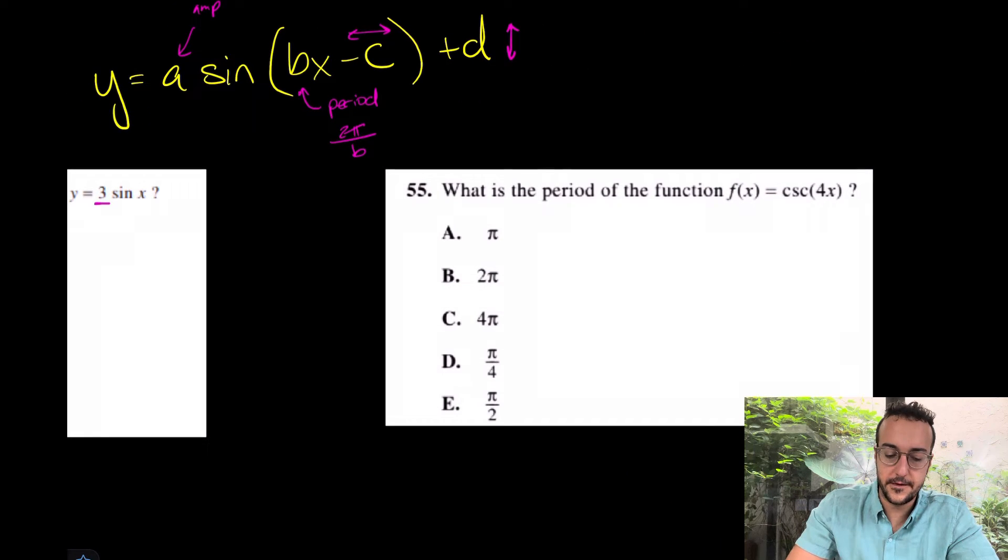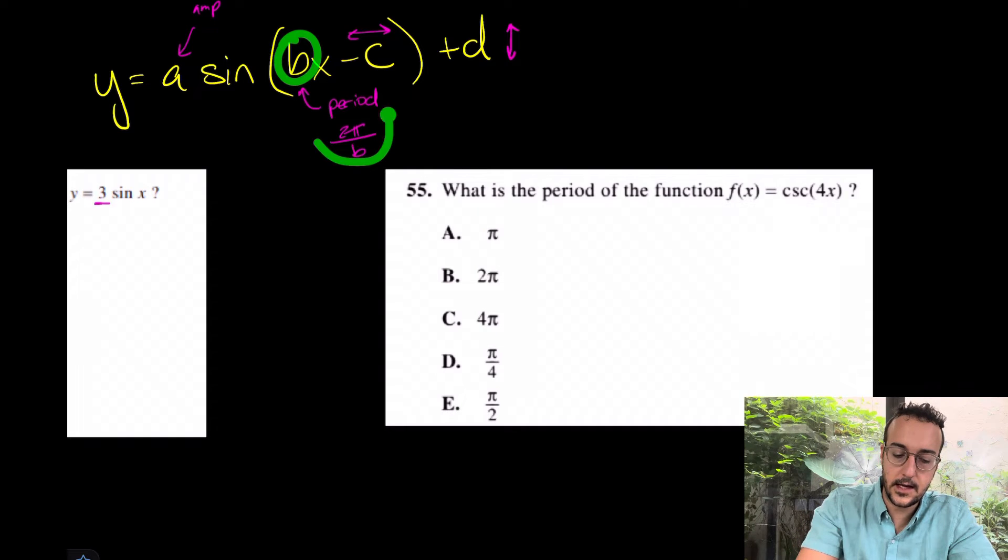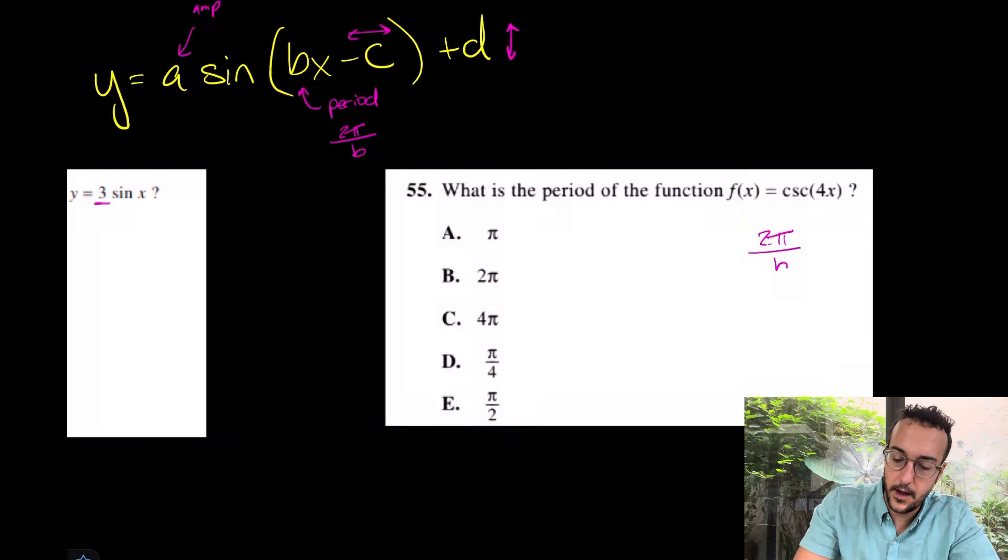It'd be a little bit harder. This is number 55 on the right-hand side. Well, this one says, what is the period of the function cosecant of 4x? Well, luckily we learned something recently. Isn't this guy right here involved with the period? Really this B value? Yep. In that case, please write this down. Really, we have 2π over B. That's a good formula to make a flashcard for. 2π over B equals the period.